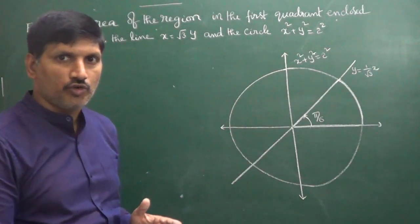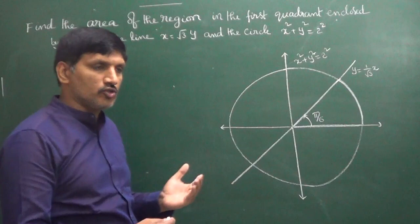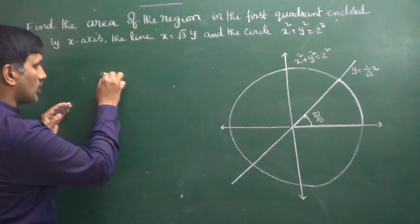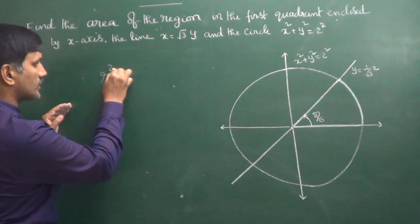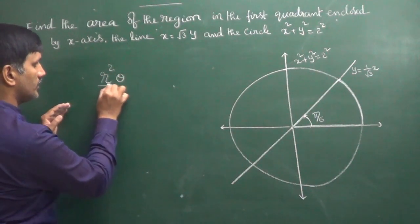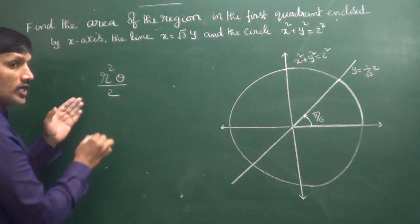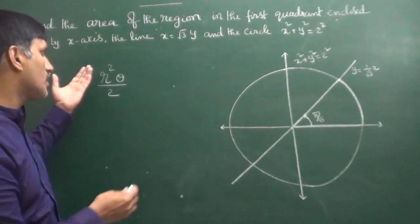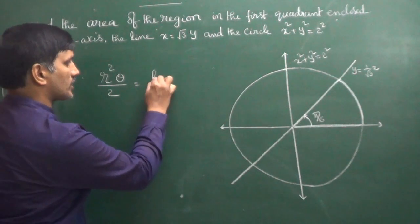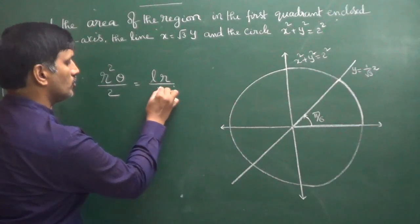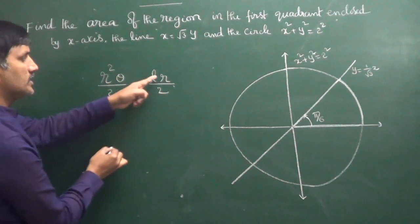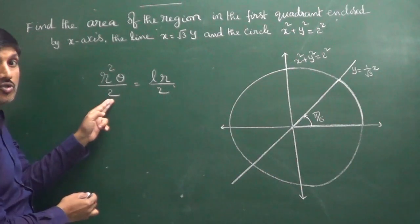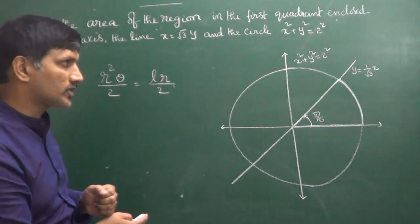Now, how to do the same question in an objective exam. For that, you need to know the area of a sector: sector area = r²θ/2. Also written as L·r/2, where L = r·θ, so sector area = r²θ/2.